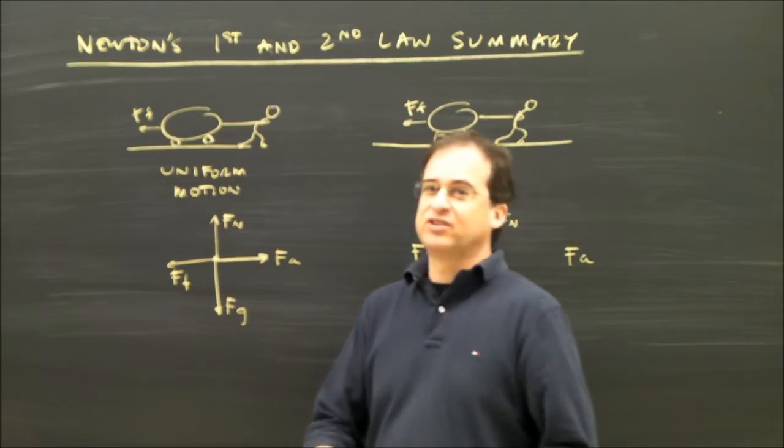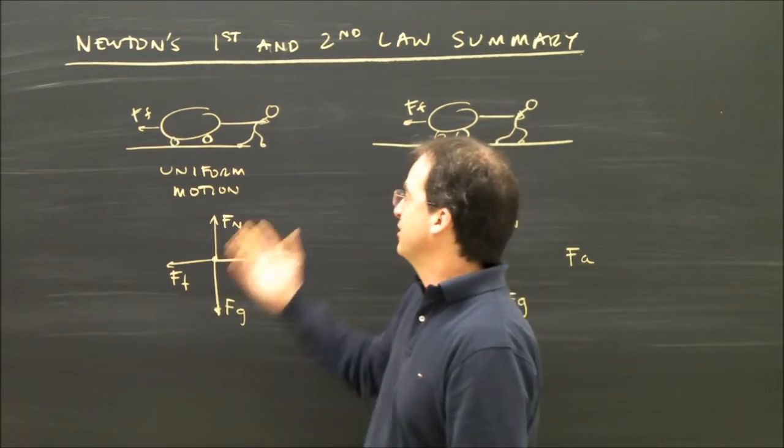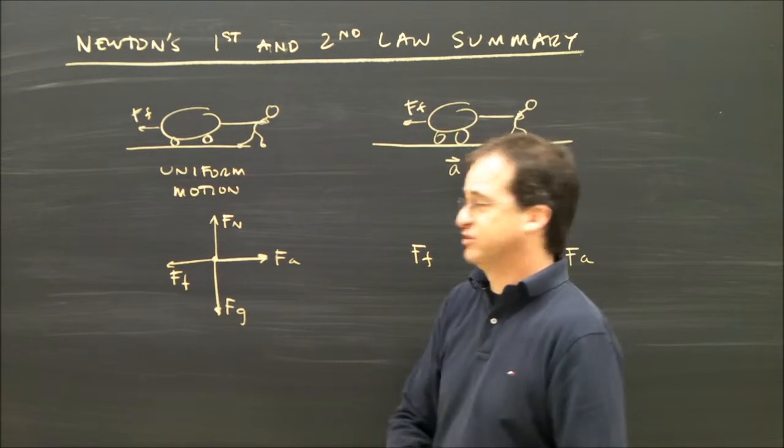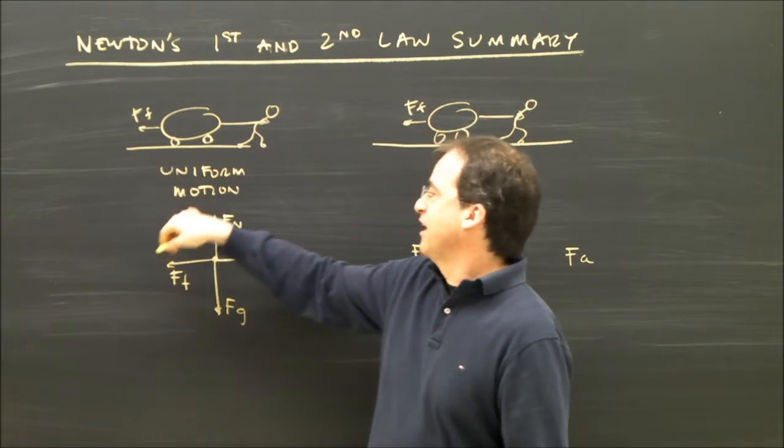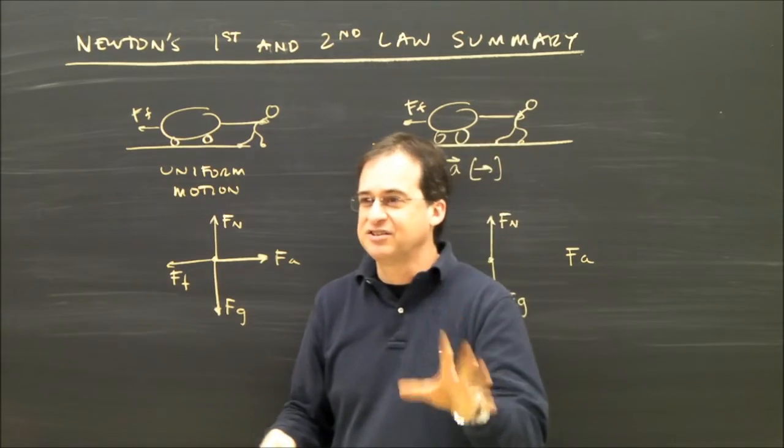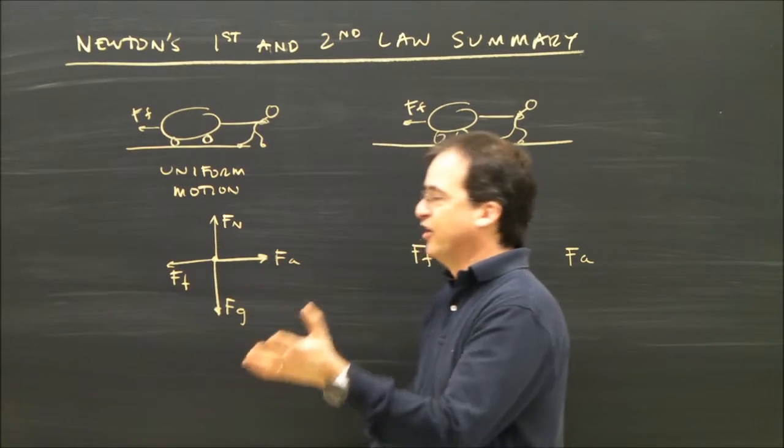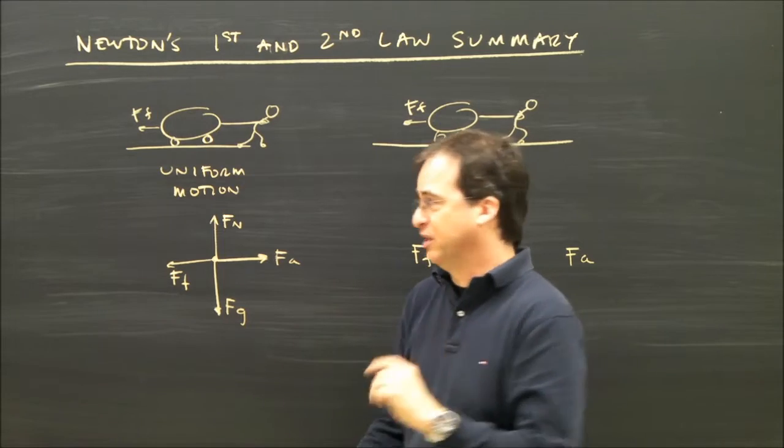If there's an unbalanced force, then the object will accelerate. So basically we look at the two possible situations. This one is telling me that this person is pulling on a cart and it's got uniform motion. As soon as I say uniform motion or constant velocity, I know that means the forces are balanced. It's going to be easy.